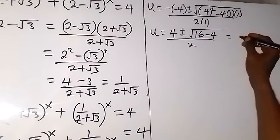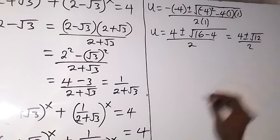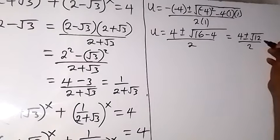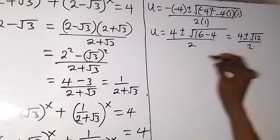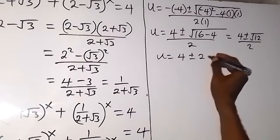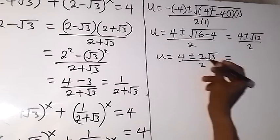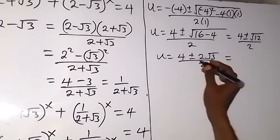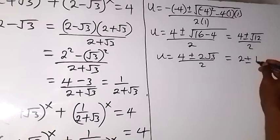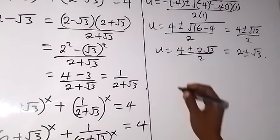Which is equal to 4 plus or minus square root of 12, all over 2. Square root of 12 can be expressed as root 4 times 3, and root 4 is 2, so we can bring 2 out. We have 4 plus or minus 2 root 3 all over 2. Since 2 is common, this reduces to 2 plus or minus root 3. So u equals 2 plus or minus root 3, giving us two values of u.